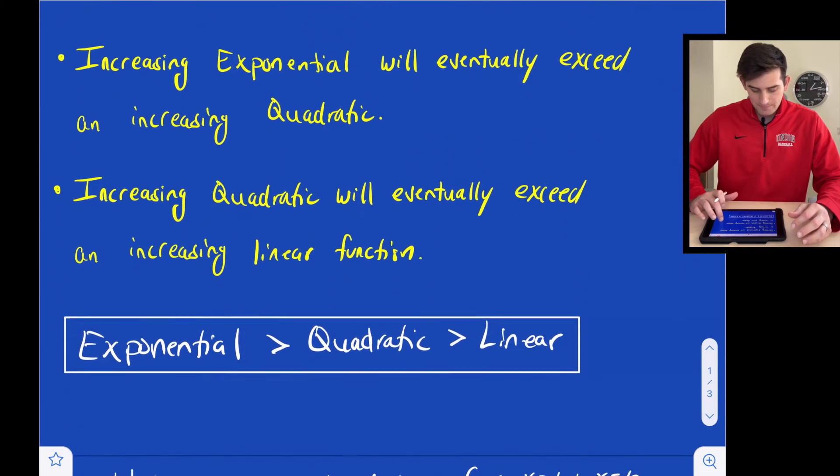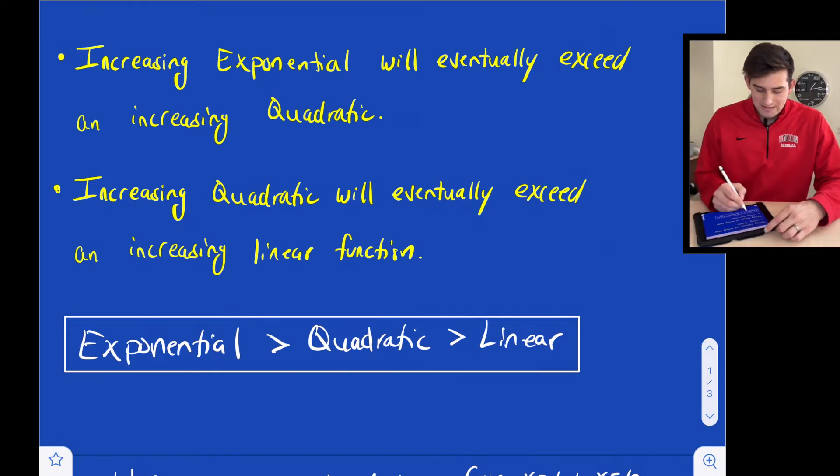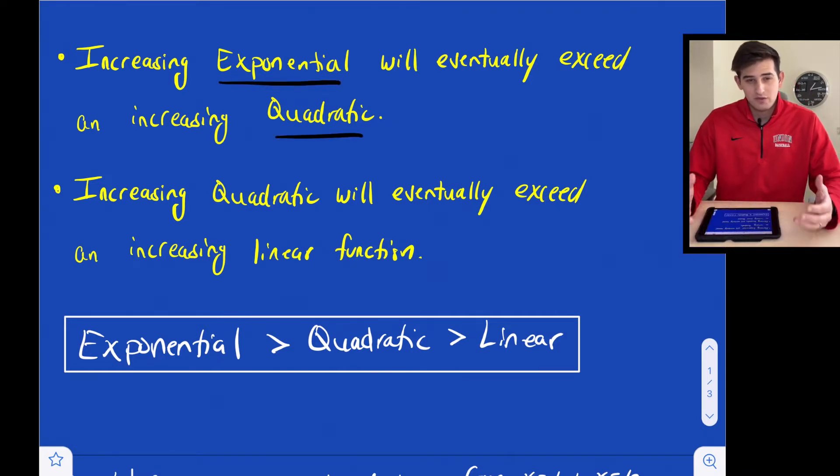A couple characteristics about these three functions: exponential, quadratic, and linear. An increasing exponential function will eventually exceed an increasing quadratic. So if you're comparing an exponential function and a quadratic function over the same interval, maybe between x equals 0 and x equals 5, the exponential function will eventually have higher y values than the quadratic function.